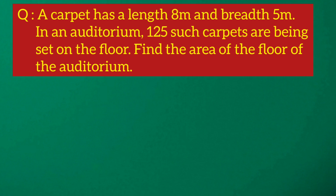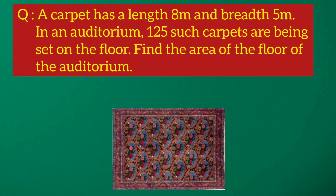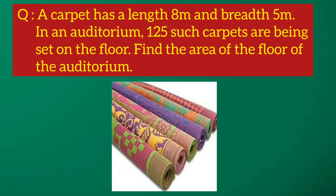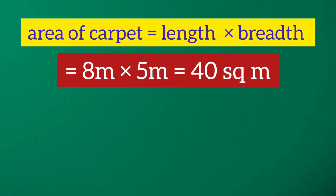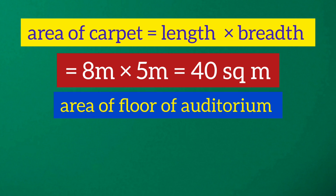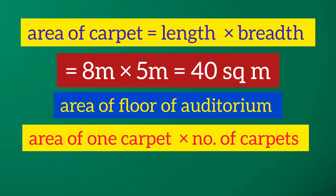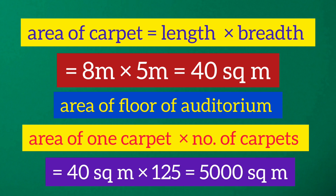Now look at this question. A carpet has a length of 8 meters and breadth of 5 meters. In an auditorium, 125 such carpets are set on the floor. First, let's calculate the area of a single carpet: length into breadth means 8 meters into 5 meters, which is 40 square meters. To calculate the area of the floor of the auditorium, we multiply the area of one carpet by the number of carpets — 40 square meters into 125 — giving 5000 square meters.